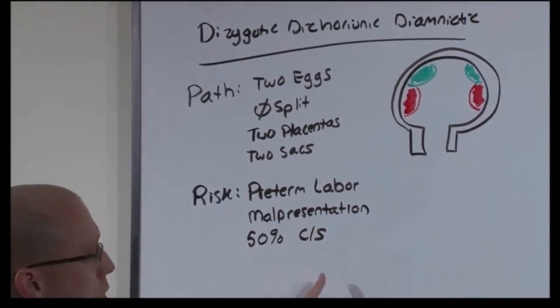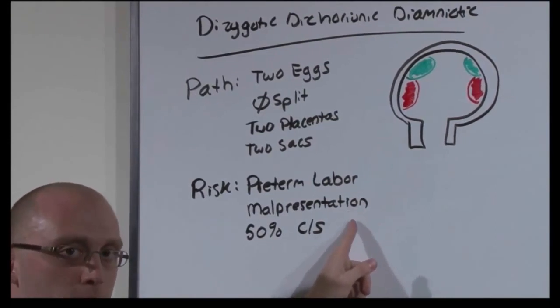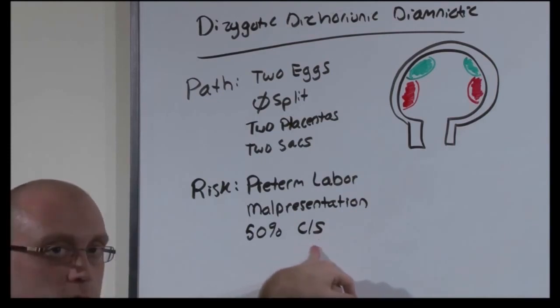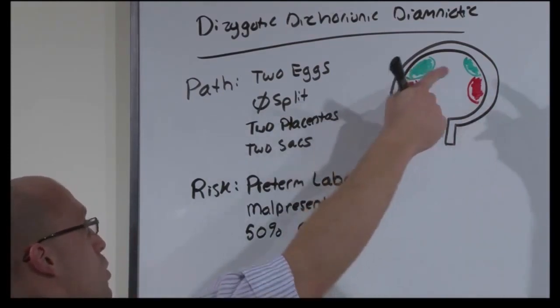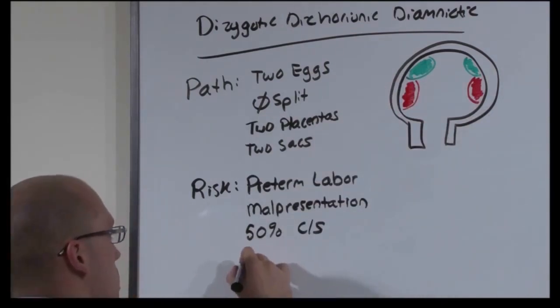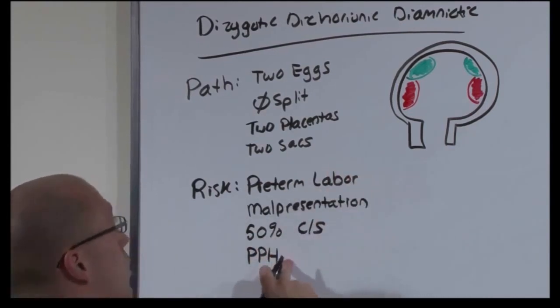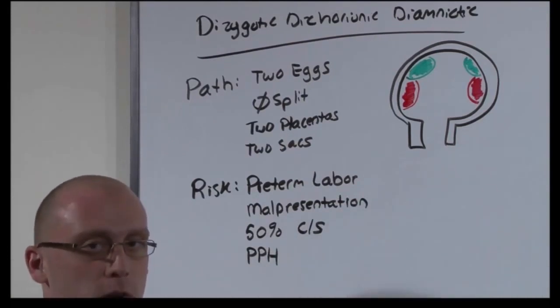C-section because even if you have one twin in malpresentation, they cannot be vaginally birthed. So even if one gets through okay, the second one is going to have to go after for c-section. And because there's multiple placentas, the uterus has been penetrated multiple times. There's an increased risk for postpartum hemorrhage. All of these risks are conferred to this twin type and all other twins we talk about from here on out.